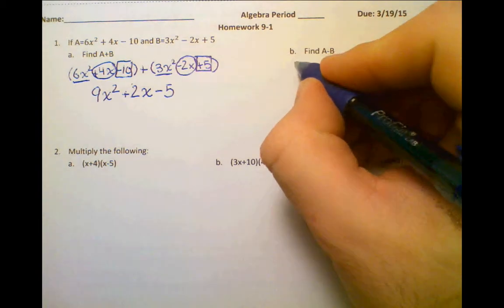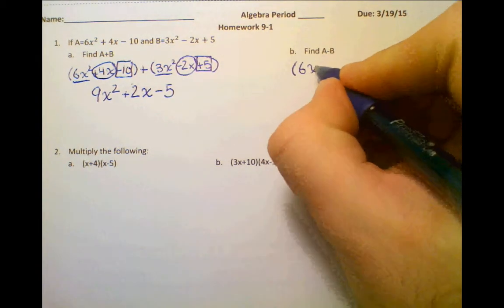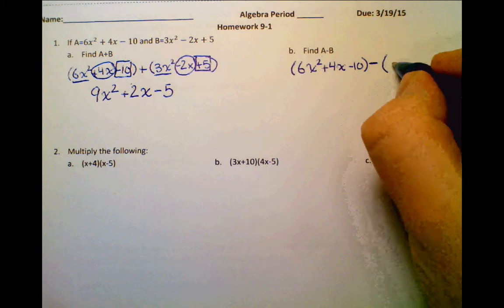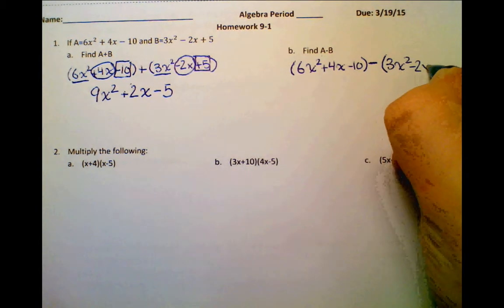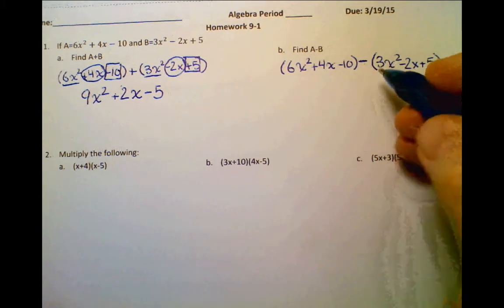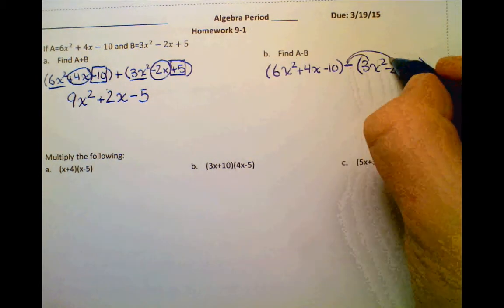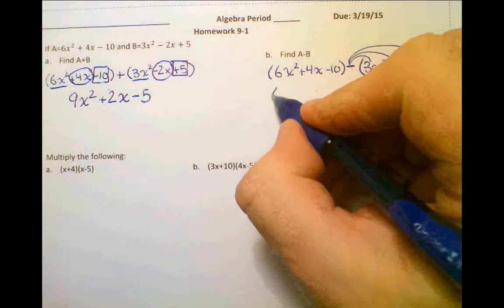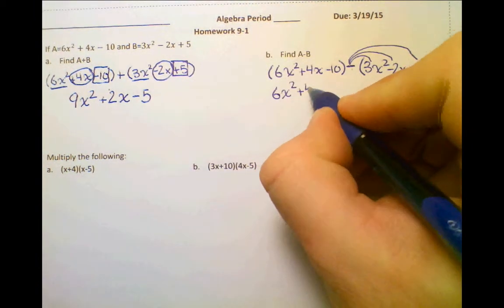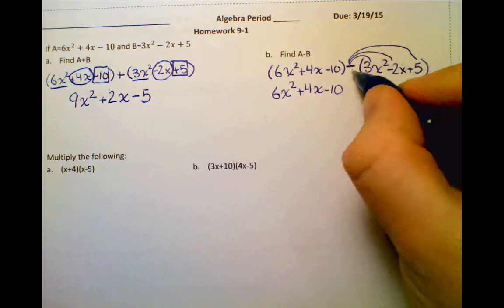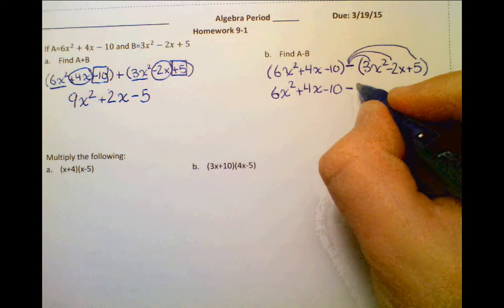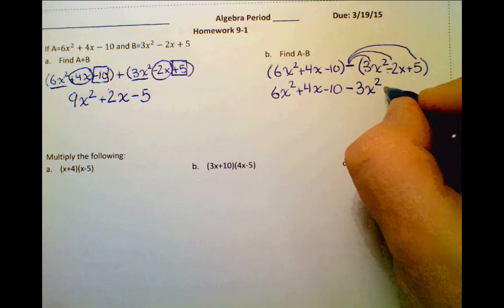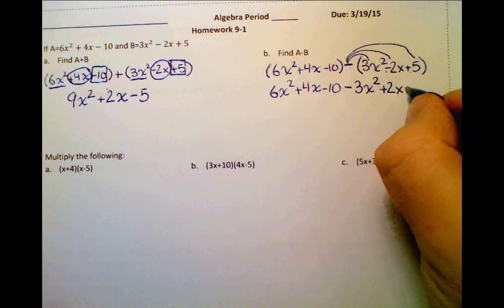Now for a minus b, we're going to use the parentheses again. The difference in this case is that we have a minus sign in between. What we have to be careful about is when you have a minus sign outside the parentheses, you need to distribute the negative sign to every single term — all we're doing is just changing the sign. So it will be minus 3x squared; the negative 2x becomes positive 2x; and the positive 5 becomes negative 5.